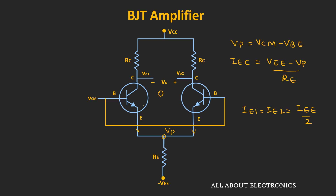To ensure the BJT operates in the active region, the value of Vcm should be such that the collector-base junction remains in reverse bias. That means the value of Vcm cannot be arbitrarily very high. Now let's see how the differential amplifier behaves for the differential input signal.